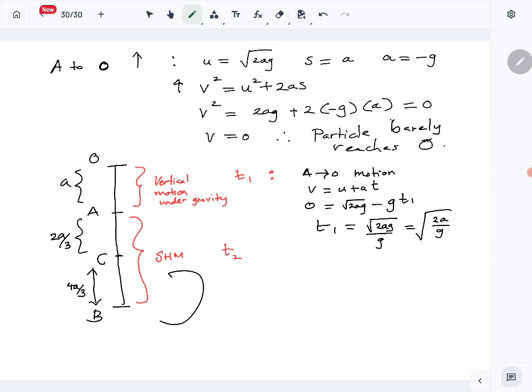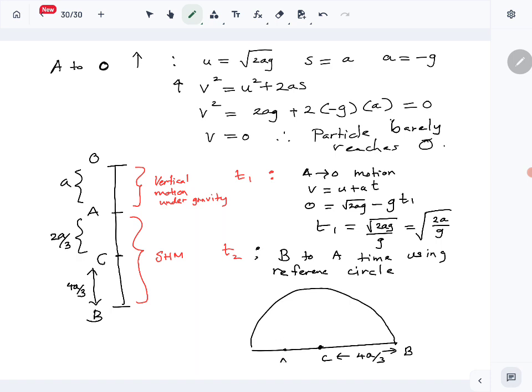Then we need to find t₂ also, then add them together to get the total time. t₂ is found using simple harmonic motion. This time we can find B to A time using the reference circle for the circular motion. So the reference circle is the circle with radius equal to the amplitude 4a over 3. So this is B, this is center, this length is 4a over 3, and then point A is 2a over 3 from the center.